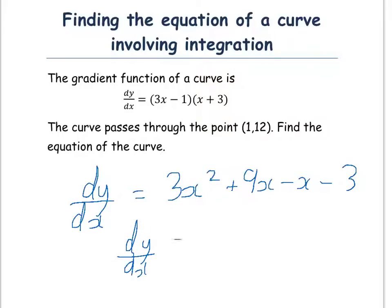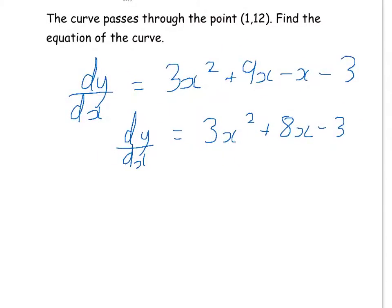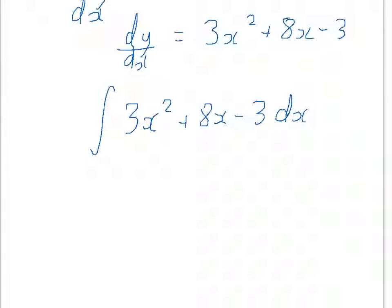So now we can integrate this. Remember the integration sign: integral of 3x squared plus 8x minus 3 dx. When you're integrating, you add 1 to the power and then divide by the new power. So y is equal to: 2 add 1 is 3, and 3 divided by 3 is 1, so x cubed.